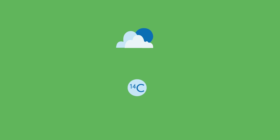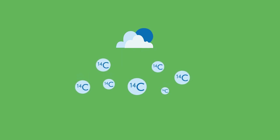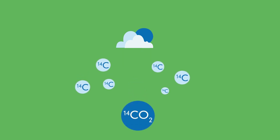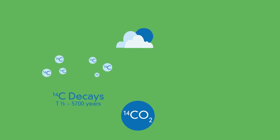Carbon-14 is formed in the atmosphere through cosmic radiation, and that C-14 that is formed is incorporated into the CO2. What is unique about carbon-14 is that it's a radioactive isotope, so it has a known decay rate of 5,700 years.